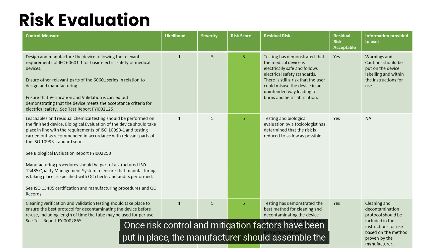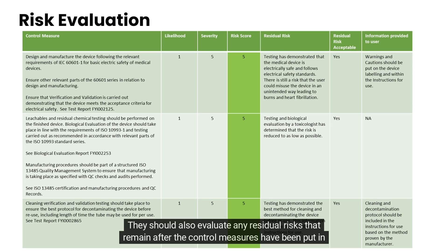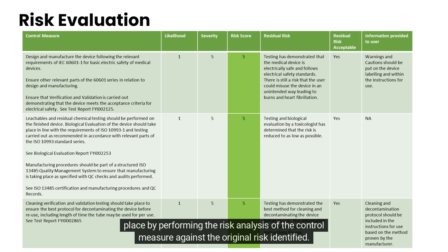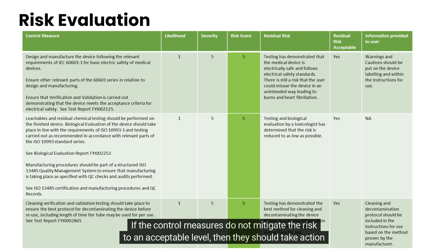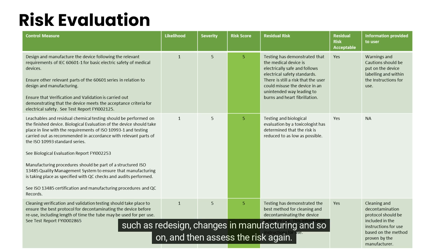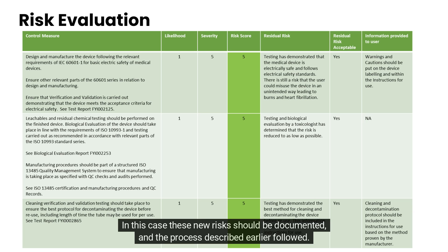Once risk control and mitigation factors have been put in place, the manufacturer should assemble the risk management team to evaluate the control measures and ensure that the risk has been reduced to as low as possible. They should also evaluate any residual risks that remain after control measures have been put in place by performing risk analysis of the control measure against the original risk identified. If the control measures do not mitigate the risk to an acceptable level, they should take action such as redesign or changes in manufacturing, and then assess the risk again. In some cases, the implementation of a control measure may introduce new risks, which should be documented and the process described earlier followed.